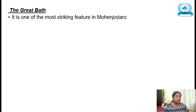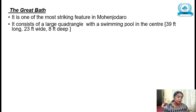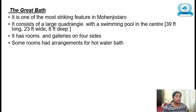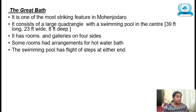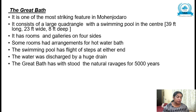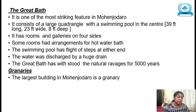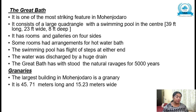Next, about the Great Bath — it is one of the most striking features of Mohenjo-daro. It consists of a large quadrangle with a swimming pool in the center. It has rooms and galleries on four sides; some rooms have arrangements for hot water bath. The swimming pool had flights of steps at either end and water was discharged by a huge drain. The Great Bath has withstood natural ravages for 5,000 years.